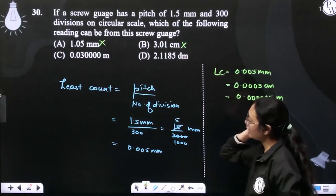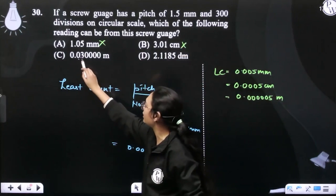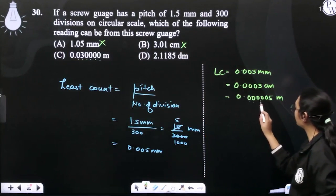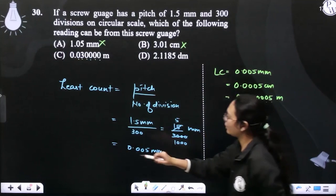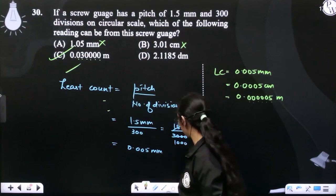Option number C. We have said that we have to do up to six decimal places. 1, 2, 3, 4, 5, 6 decimal places. So, 1, 2, 3, 4, 5, 6. So, we have to write the answer. Option number C is the correct answer.